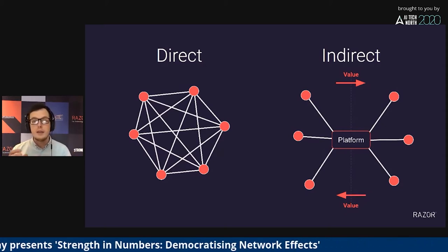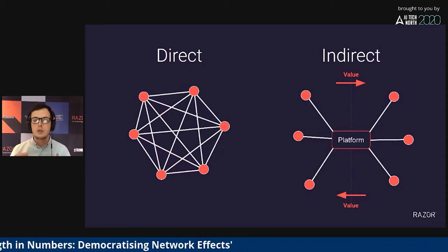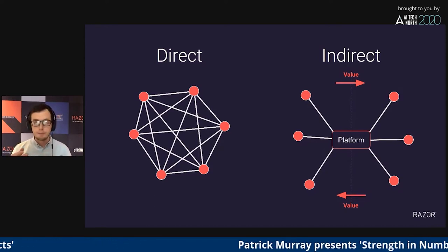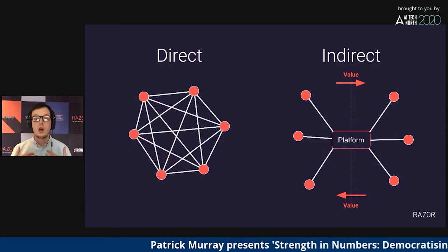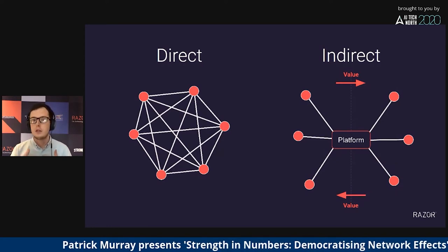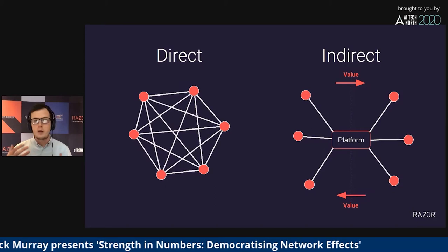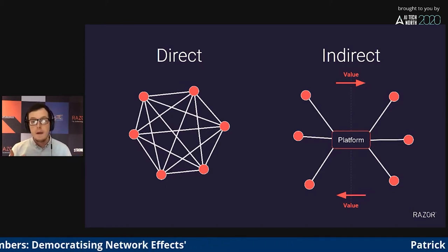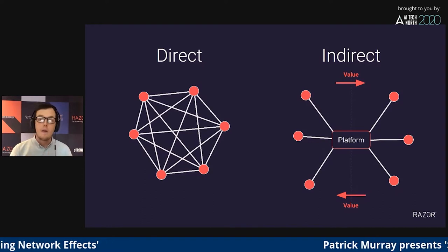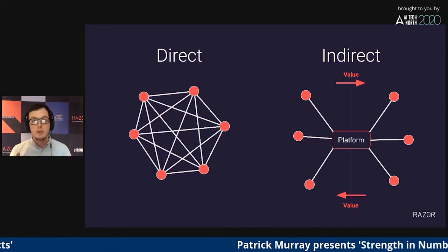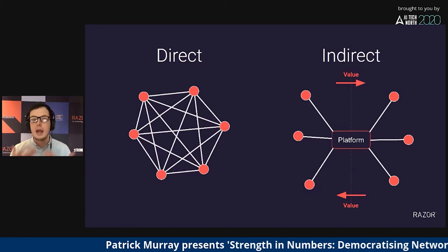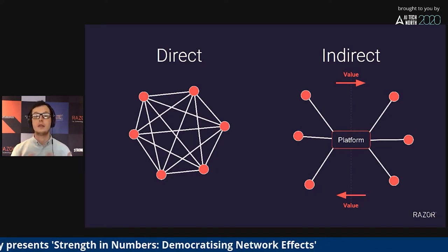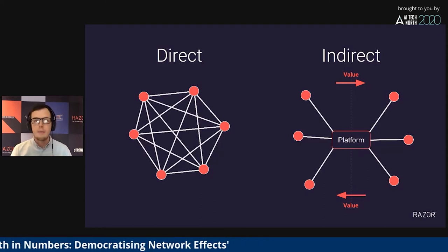Indirect, on the other hand, is where the presence of one network causes this increase in value for a complementary network. A great example of this is Uber. As a passenger, there's no direct benefit to me if there are more passengers using Uber. In fact, when I'm trying to fight for a ride at one minute past 10 at night, it's quite the opposite. However, the more passengers require rides, the more drivers sign up, which results in better coverage, more passengers, and so on, and we get this feedback loop. Even though I don't get the benefit from the passengers directly, I get this indirect benefit.